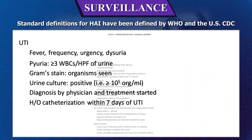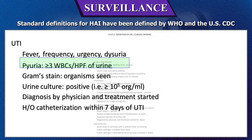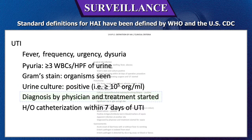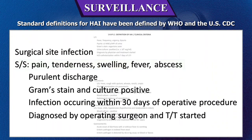Definition of healthcare-associated infection — Urinary tract infection: clinical criteria include fever, frequency, urgency, dysuria, pyuria (≥3 WBCs per high power field of urine), gram stain with organisms seen, urine culture positive (≥10⁵ organisms per ml), diagnosis by physician with treatment started, and history of catheterization within 7 days of urinary tract infection.